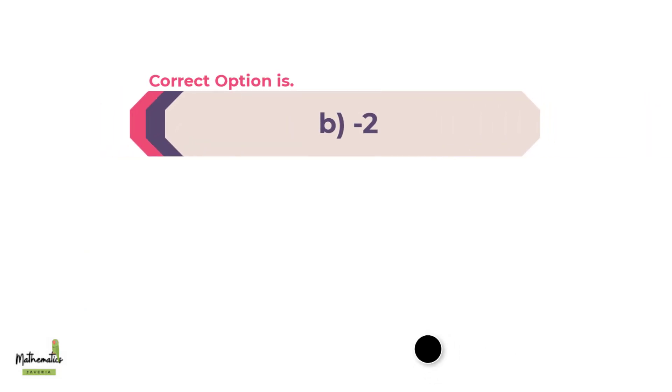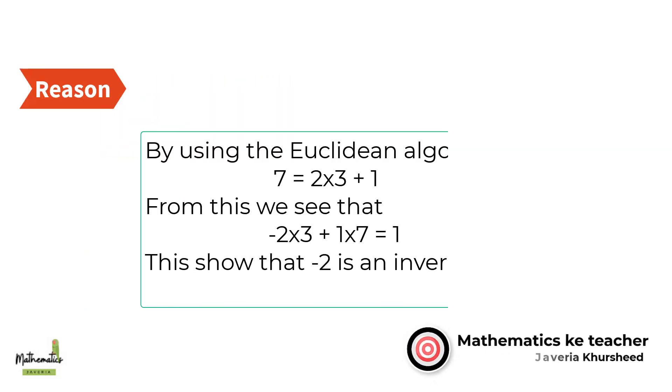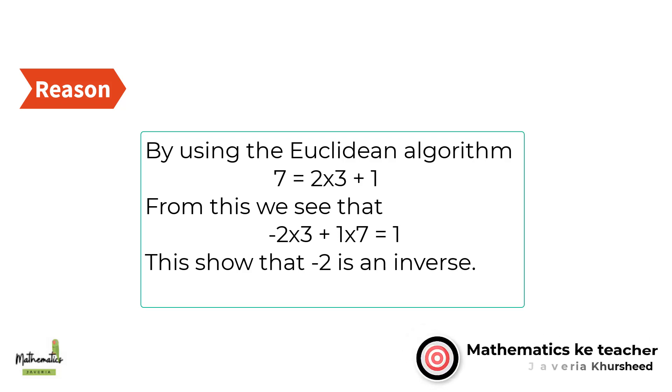Correct option is B, minus 2. By using the Euclidean algorithm, 7 equals 2 by 3 plus 1. From this we see that minus 2 by 3 plus 1 by 7 equals 1. This shows that minus 2 is an inverse.